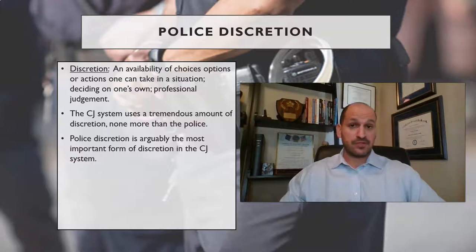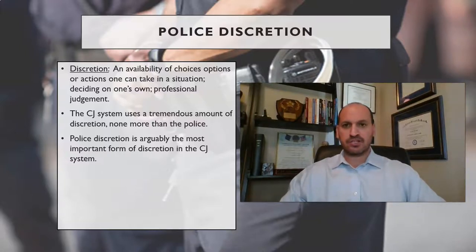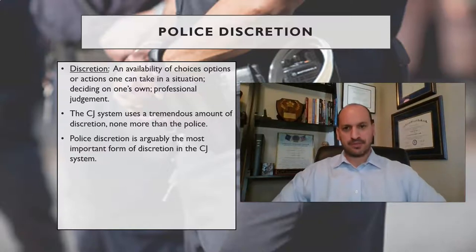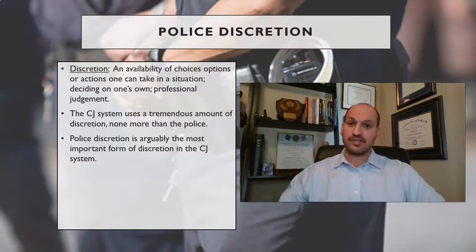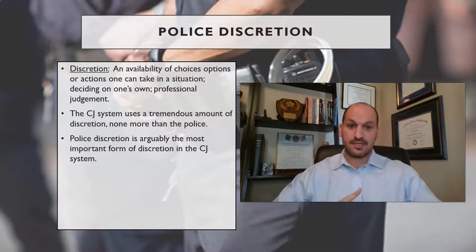Discretion is an availability of choices, options, or actions that one can take in a situation based on professional judgment. The entire criminal justice system uses tremendous amounts of discretion — prosecutors, courts — but police discretion is the most important because it's the difference between entering the criminal justice process and not having existed in it at all.